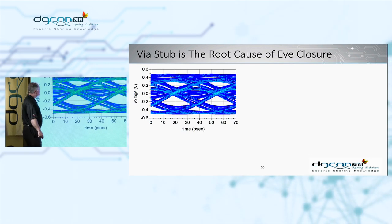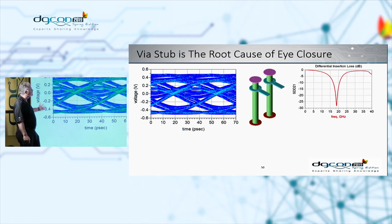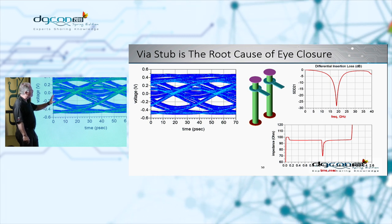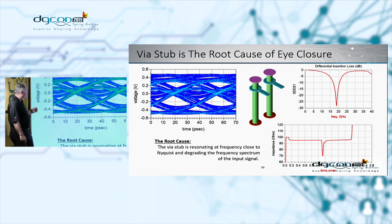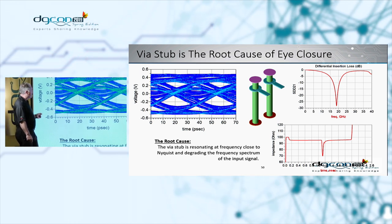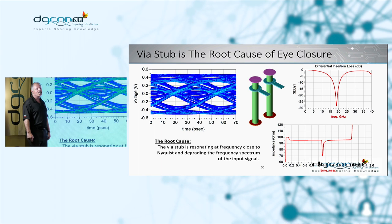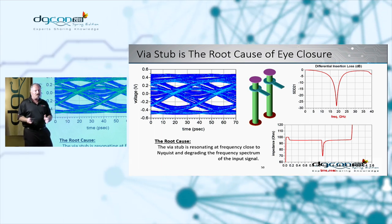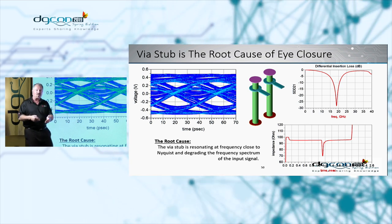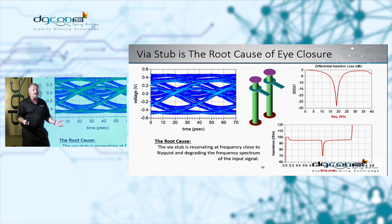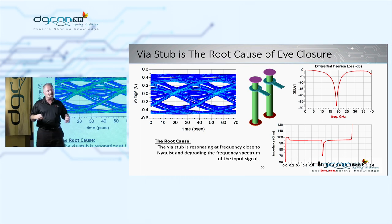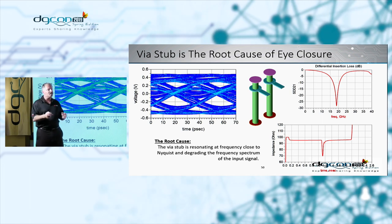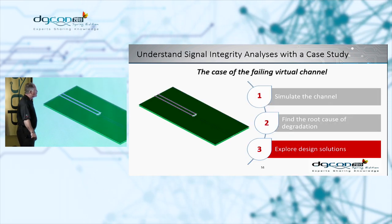We can conclusively say the via stub is the root cause of the eye closure. We've verified this in both the frequency domain and the time domain. The via stub resonates at a frequency close to the Nyquist, degrading the frequency spectrum of the input signal. We guessed it ahead of time, verified it step by step — we can guess wrong, and that's okay. It's better to think through expectations before simulating or measuring.